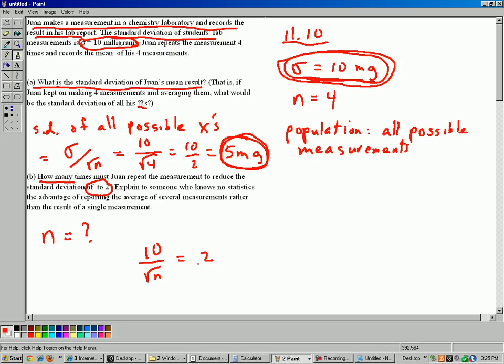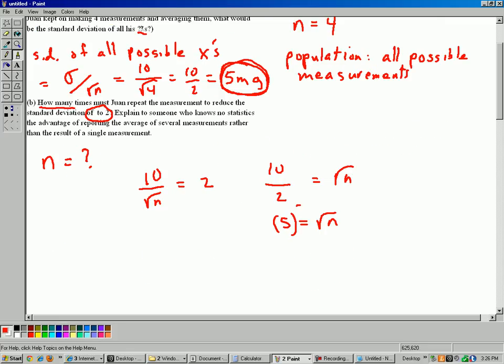So we can divide by 2 here, move the square root up to the other side. So it's 5 equals square root of n. And then square both sides. And we have n equals 25. Okay, so that means that Juan has to repeat his measurements 25 times and average them all together in order to get your standard deviation down to just 2. So that's a lot of extra work just to get that standard deviation down to two measurements. But if that's what he needs, then that's what he has to do.